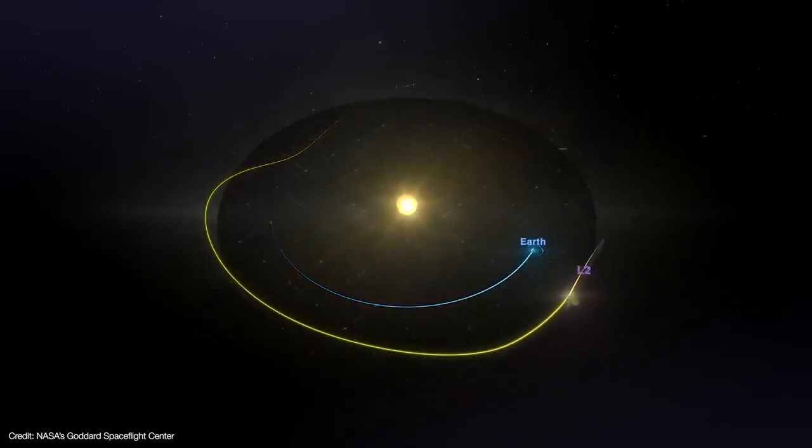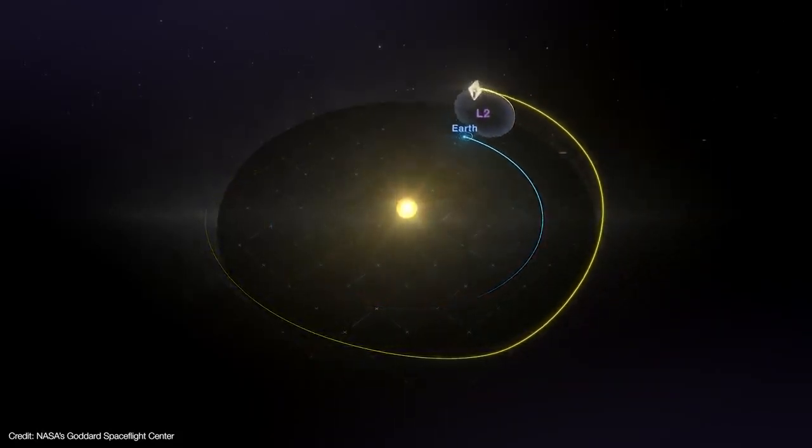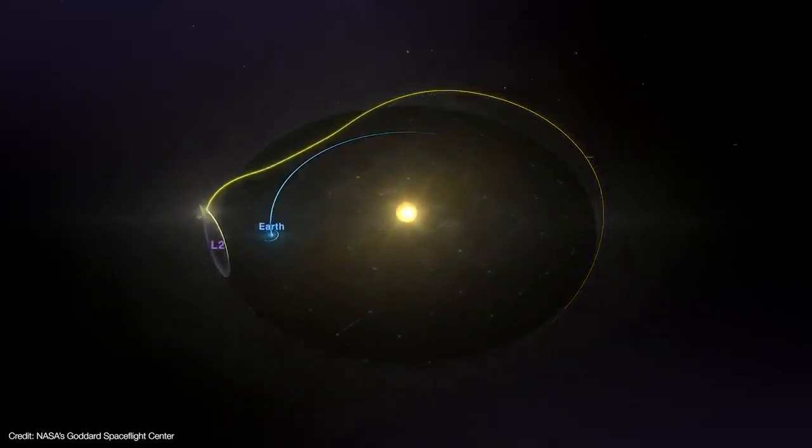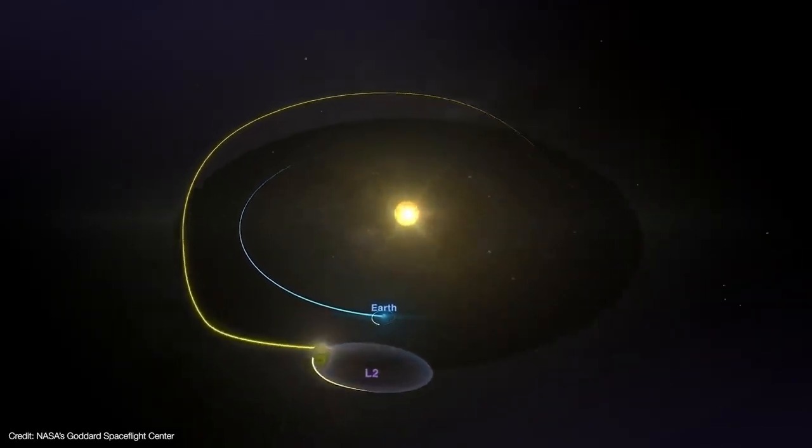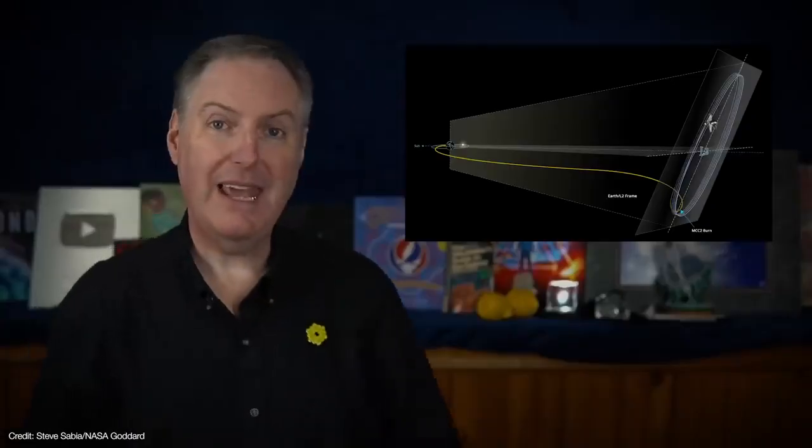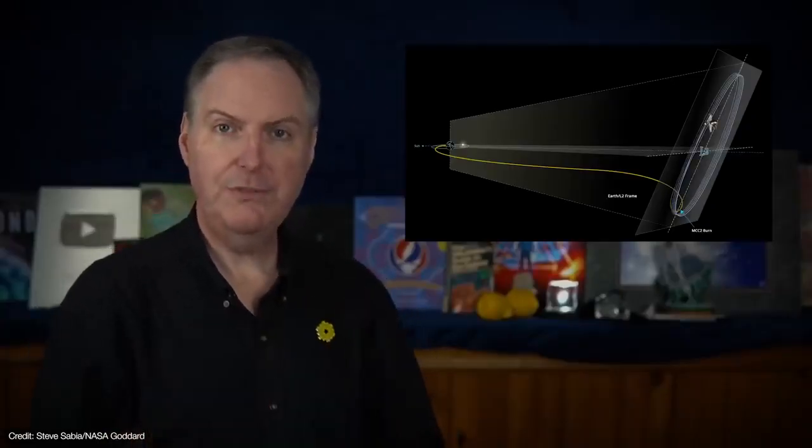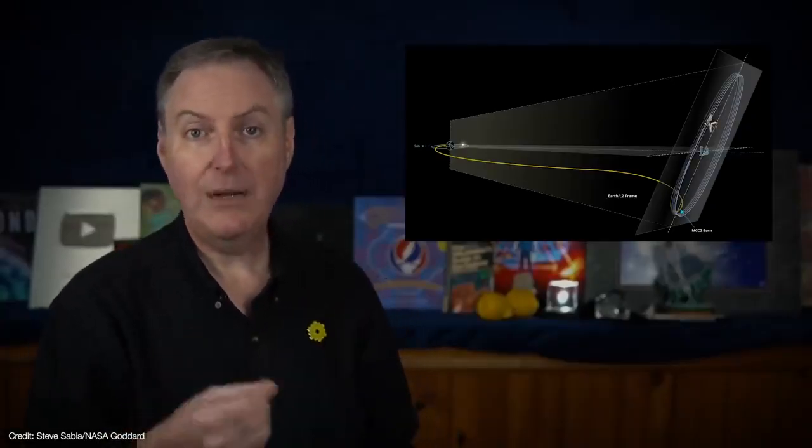But at the same time, that's a two-body system. It doesn't explain how Webb can orbit a point that's outside of another two-body system. Well the good news is that we can break this problem down and understand just what the L2 point is and how Webb can orbit around it.